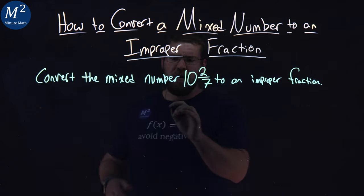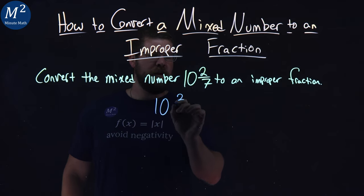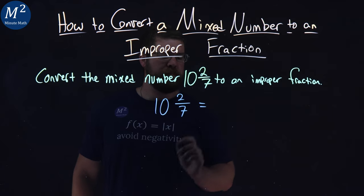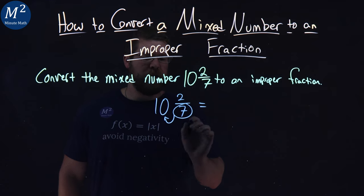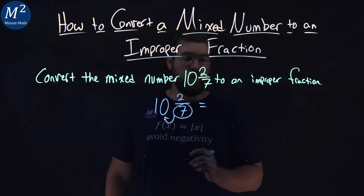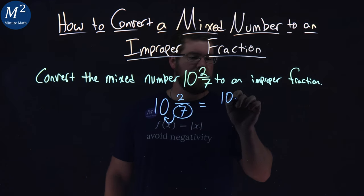What our first steps are, I like to rewrite our problem 10 and 2 sevenths so I can break this down. I first take that 7 and multiply it by the 10 and put it in the numerator. So we have 10 times 7.